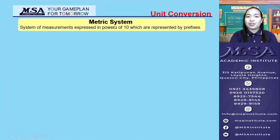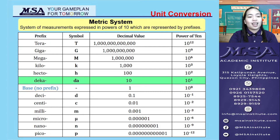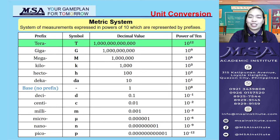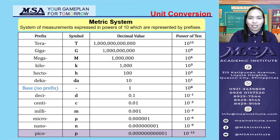Now let's move on to the metric system — a system of measurements expressed in powers of 10, represented by prefixes. We have base units: liters, meters, and grams. Units bigger than the base unit include deca, hecto, kilo, mega, giga, and tera. Units smaller than the base unit include deci, centi, milli, micro, nano, and pico.